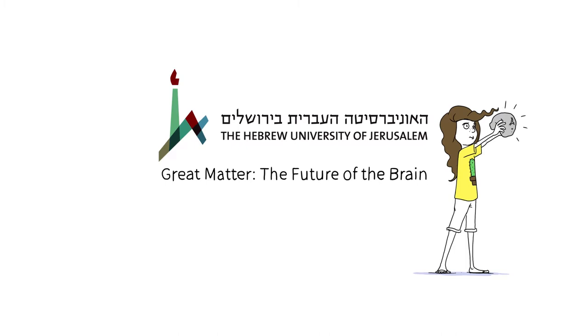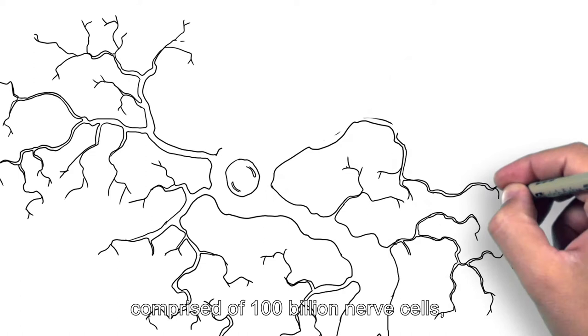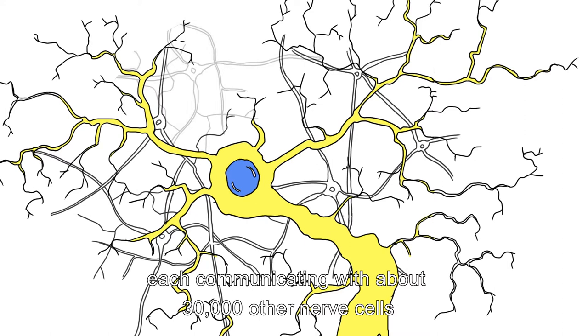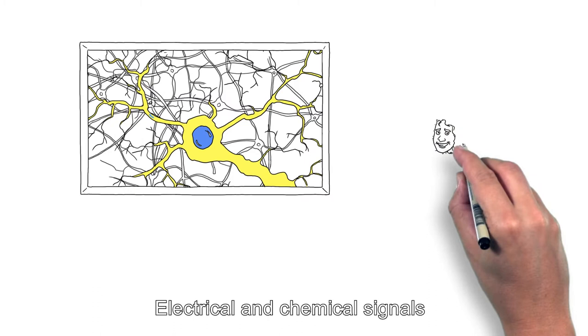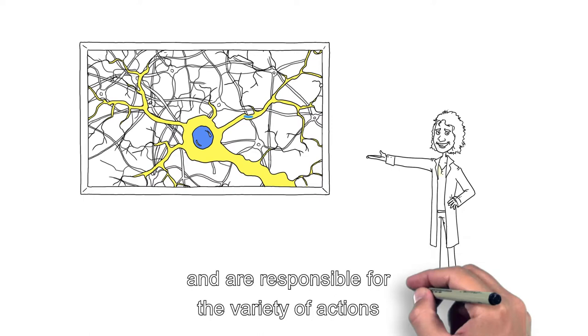The brain is a physical organ comprised of 100 billion nerve cells, each communicating with about 30,000 other nerve cells through connections called synapses. Electrical and chemical signals run around this structural foundation and are responsible for the variety of actions our brain performs.